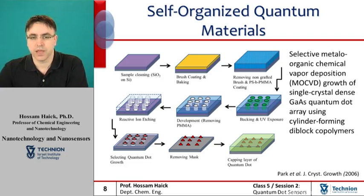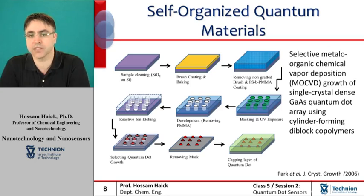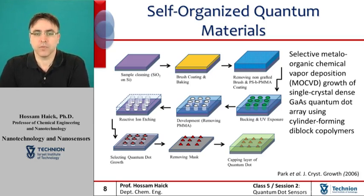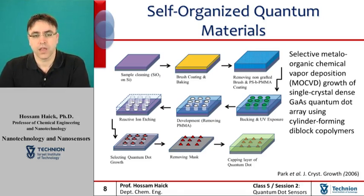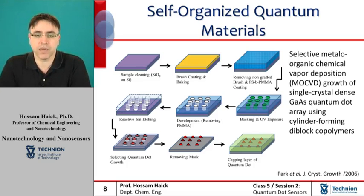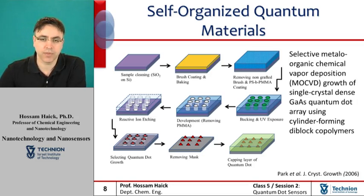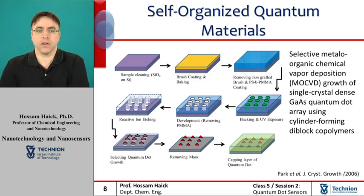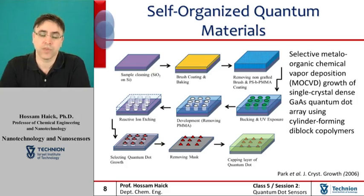In this process, atoms that one would like to incorporate in the crystal are combined with complex organic gas molecules and passed over a hot semiconductor wafer. The heat breaks up the molecules and deposits the desired atoms on the surface. The deposition of the molecules on the surface is done layer by layer. By varying the composition of the gas, one can change the properties of the crystal at an almost atomic scale. This process can grow high-quality semiconductor layers, and the crystal of these layers is perfectly aligned with that of the substrate.